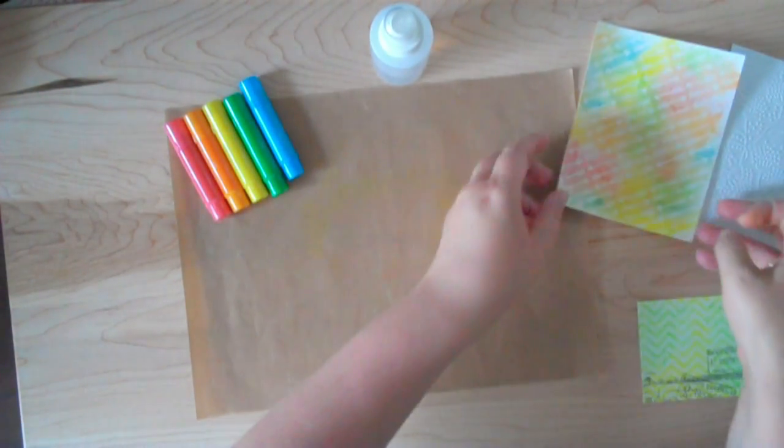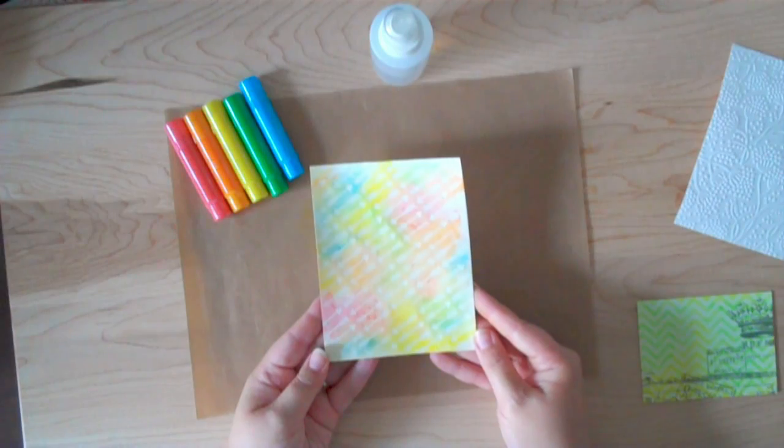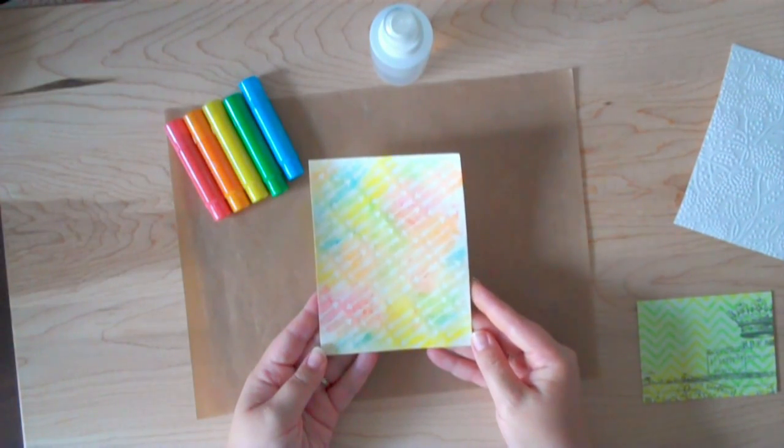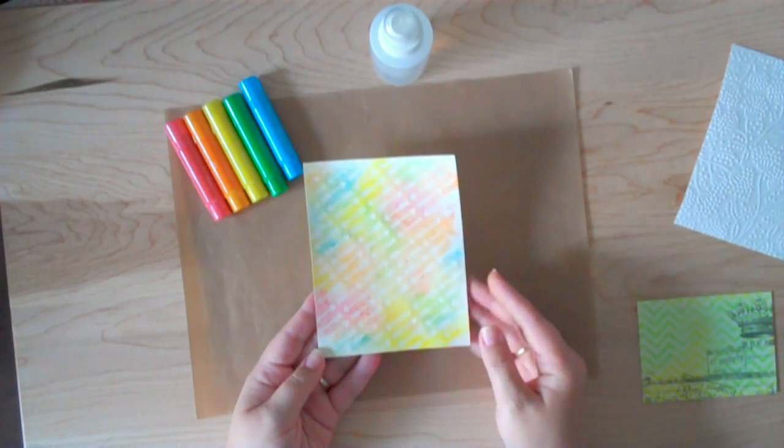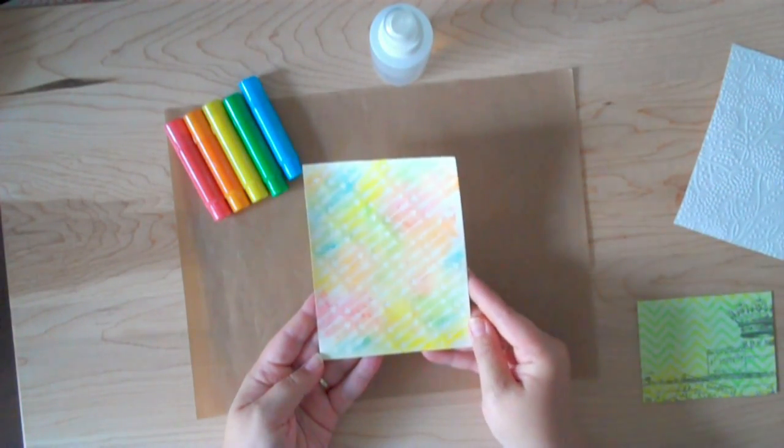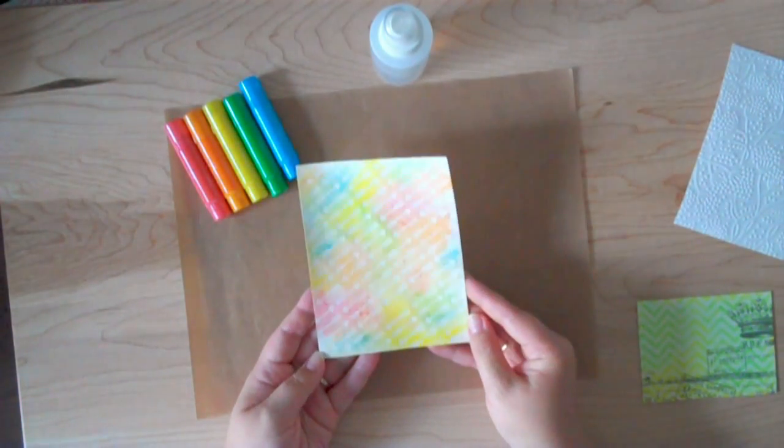You could also make your own resist. Here I used some Lawn Fawn stamps and clear embossing powder. I heat set it with an embossing tool. Then I went and applied my color over the top, creating an interesting background.